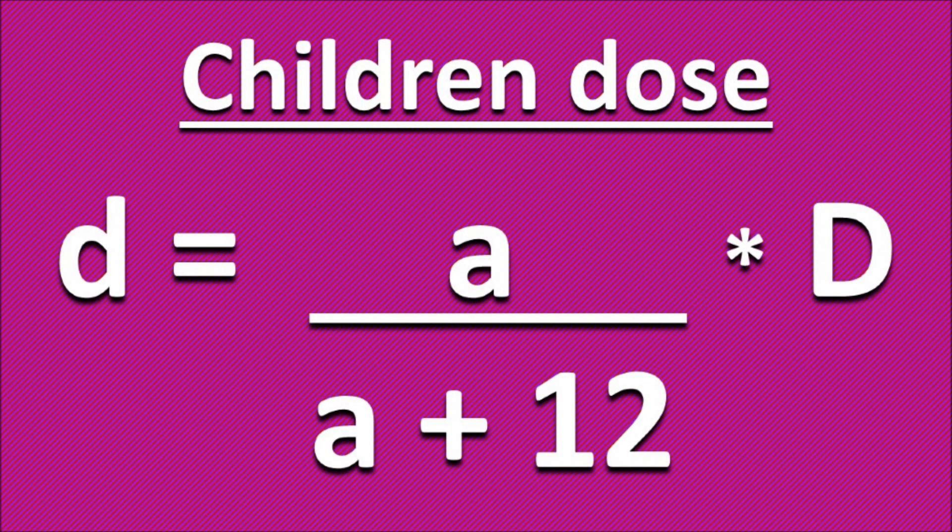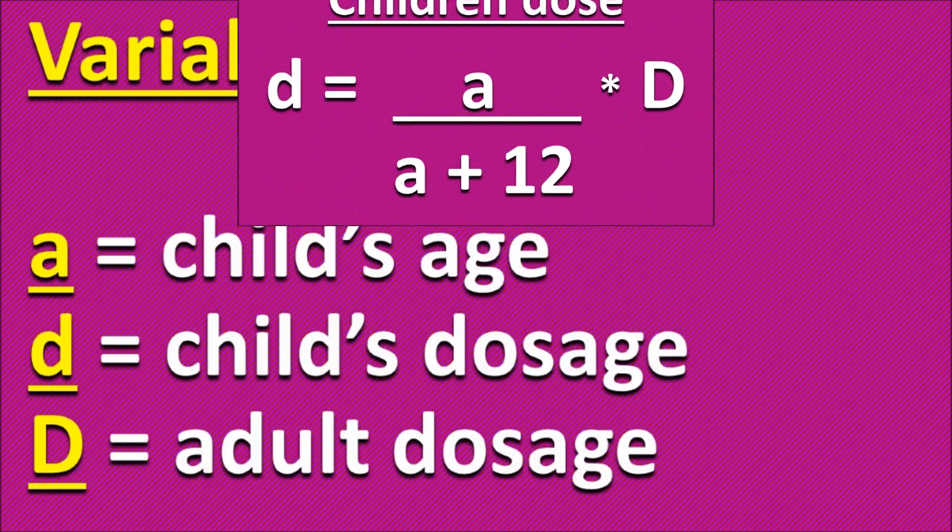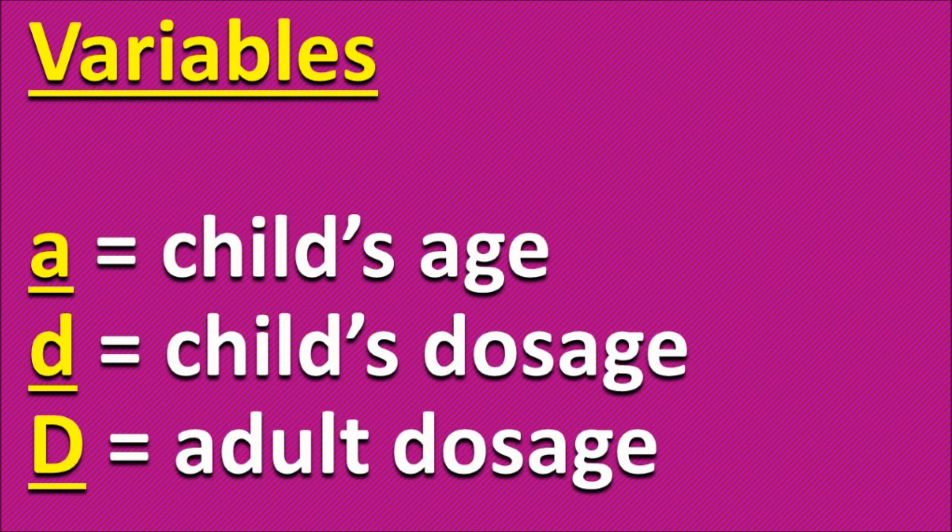Instead, we're going to use this one. This one I find is easier to understand. Now, to understand the variables here, we have A, which is the child's age, small d or lowercase d, which is the child's dosage, and large D or capital D, which is the adult dose.